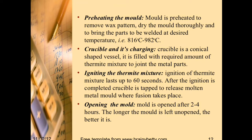Step 5, crucible and its charging — the crucible is a conical-shaped vessel filled with the required amount of thermite mixture to join the metal parts. Step 6, igniting the thermite mixture — ignition of the thermite mixture lasts up to 60 seconds only. After ignition is completed, the crucible is tapped to release molten metal into the mould where fusion takes place.